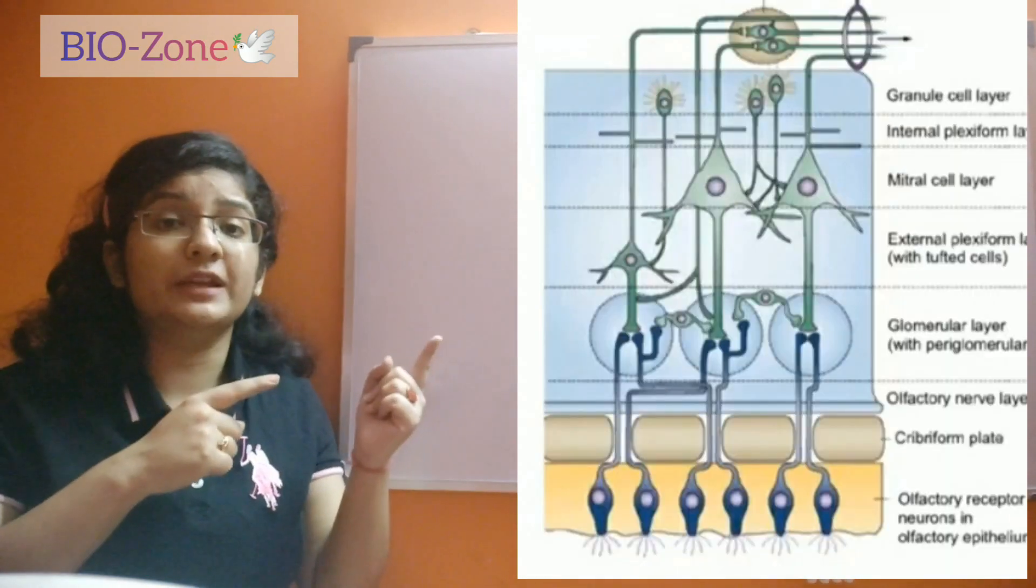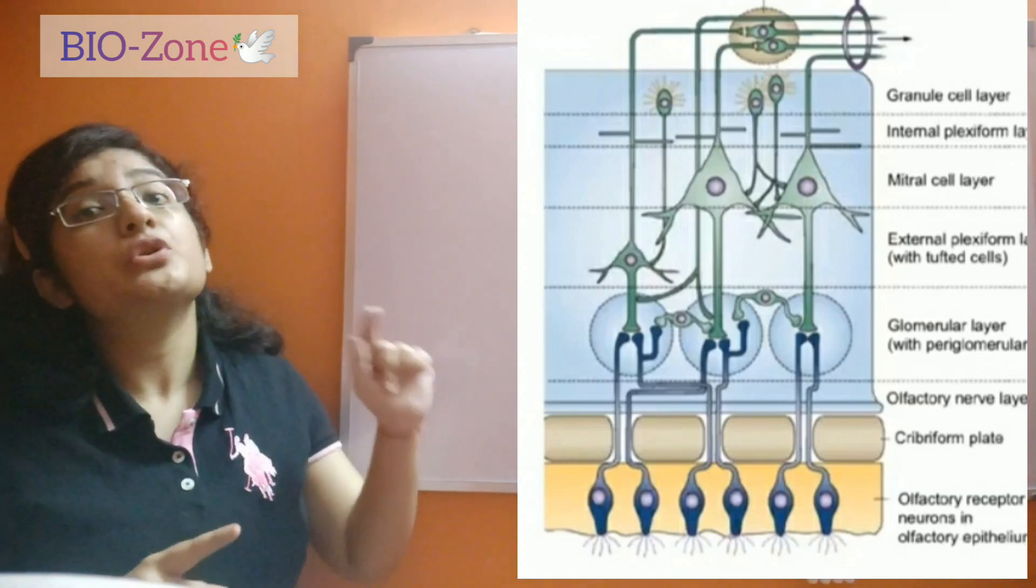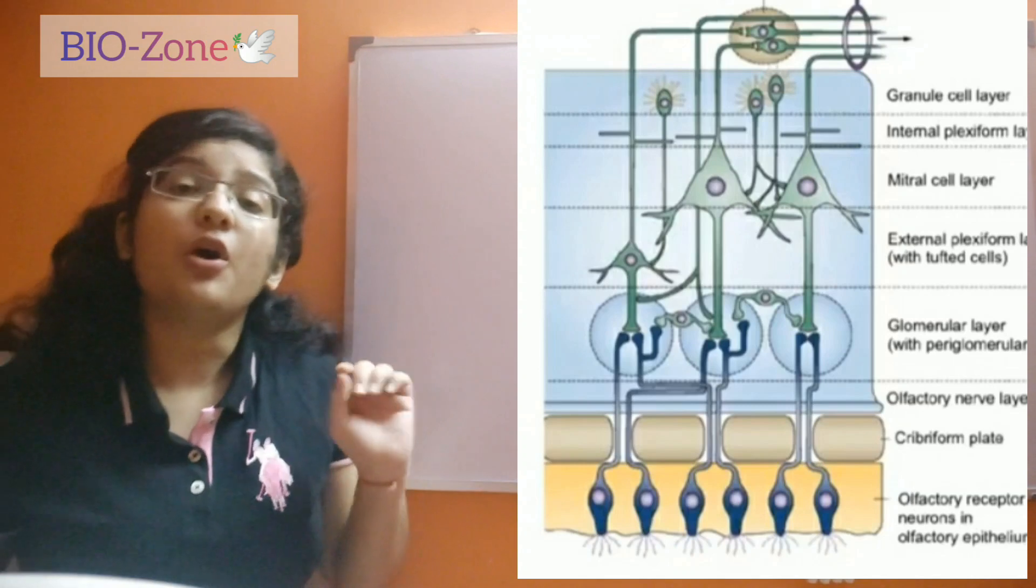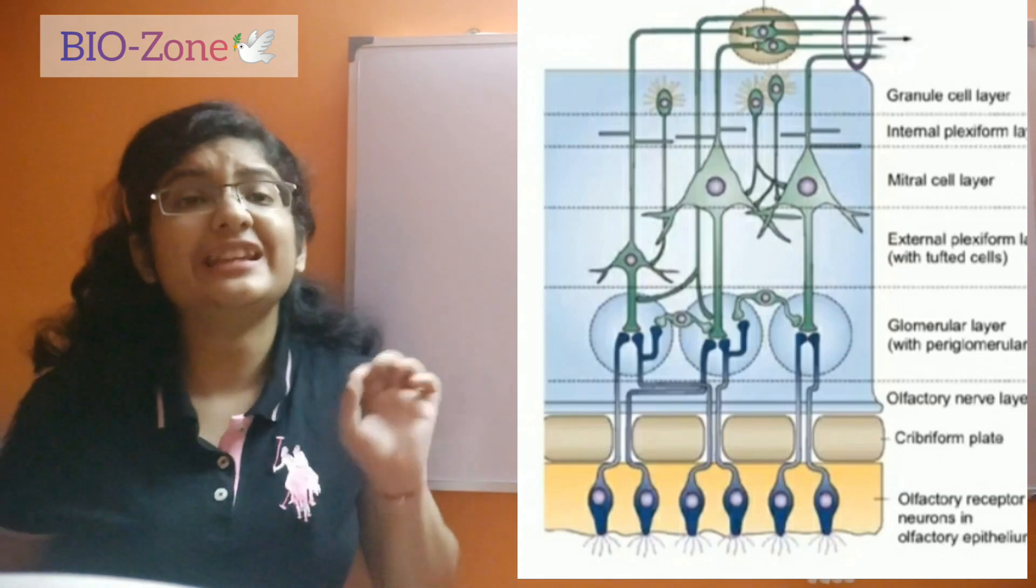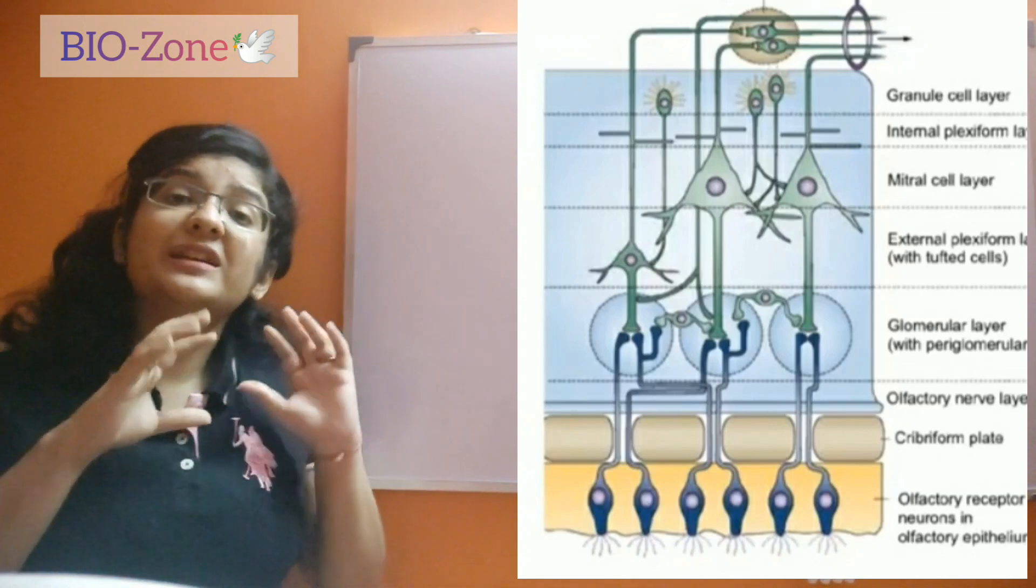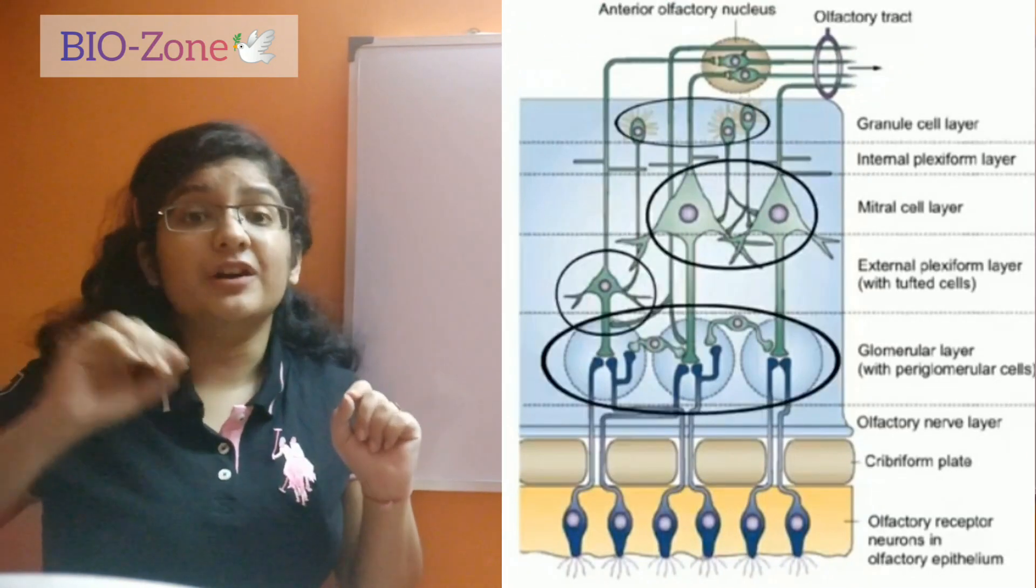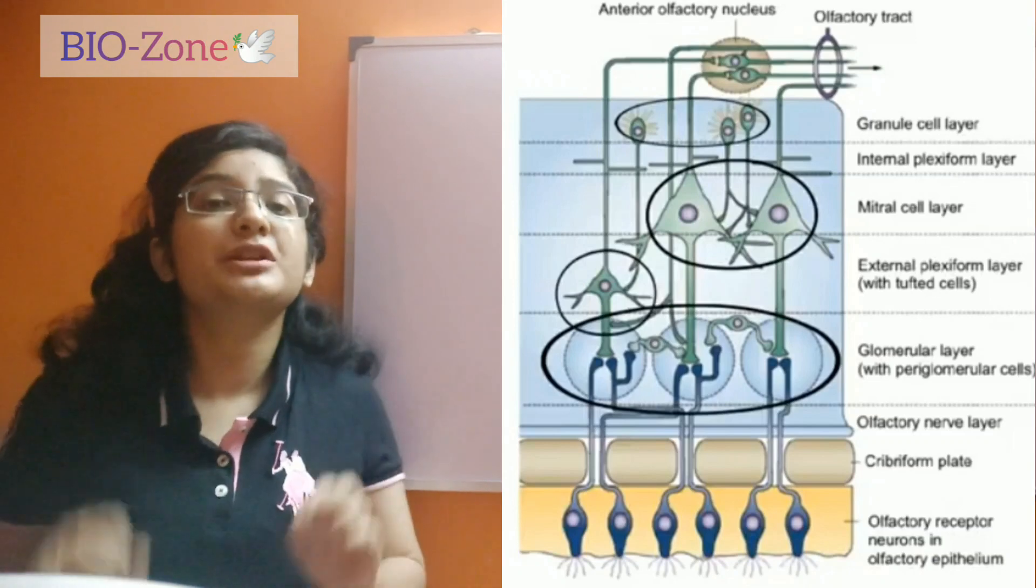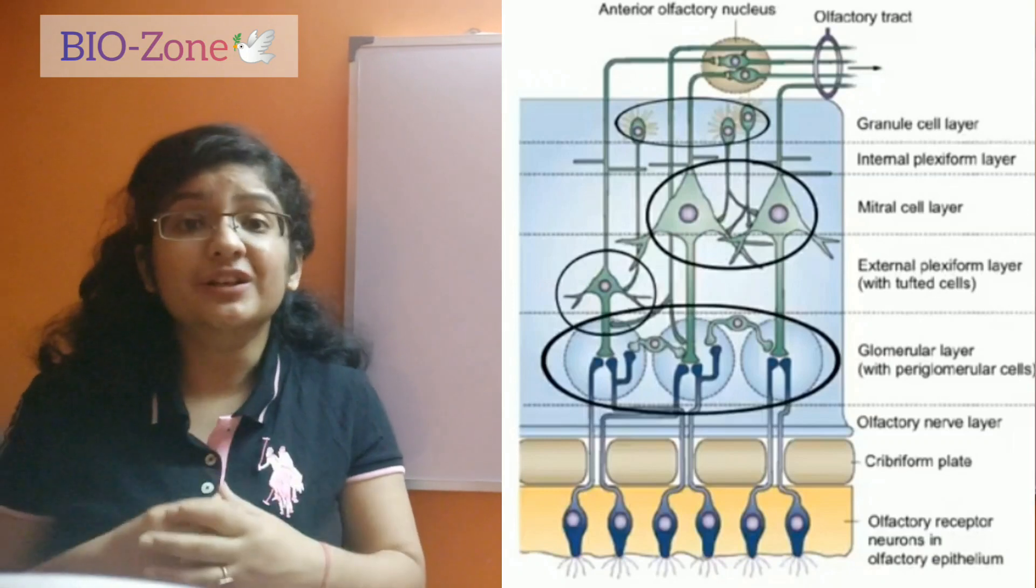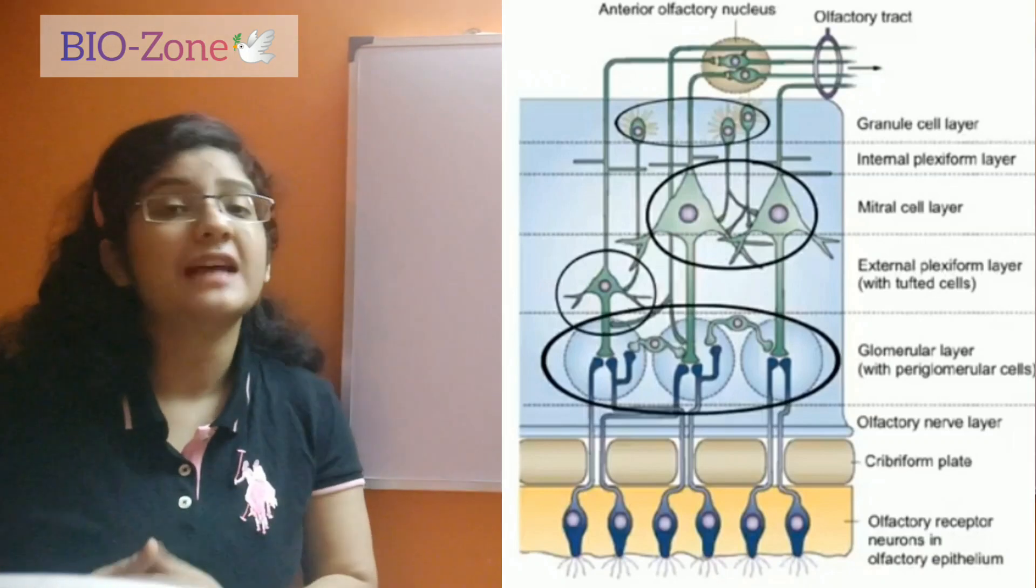Now these electrical stimuli via the axon will go to another set of neurons which is raised within the olfactory bulb. Here an interesting thing happens. What is that? From different receptor cells, the axons will go to a single mitral or tufted cell, which is the next set of neurons. So here the refinement of the olfactory stimulus happens.